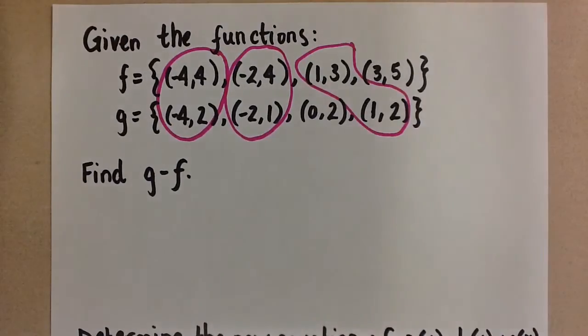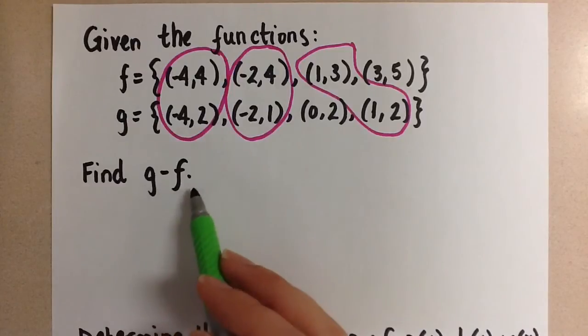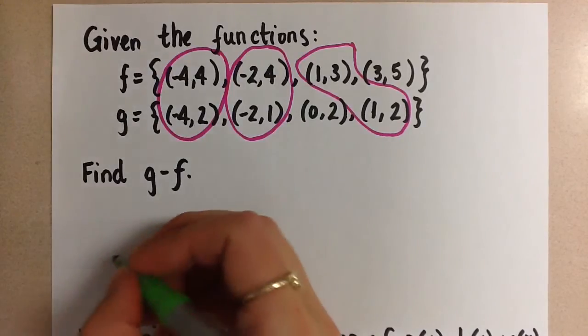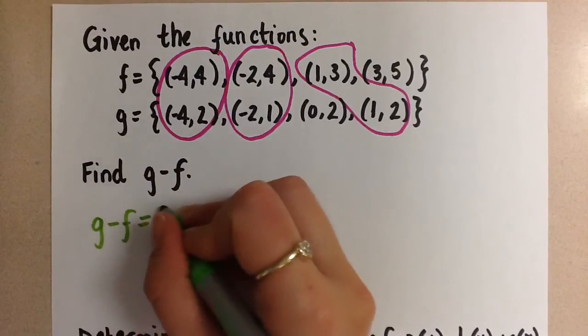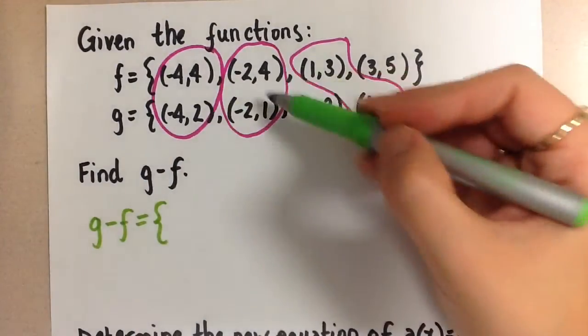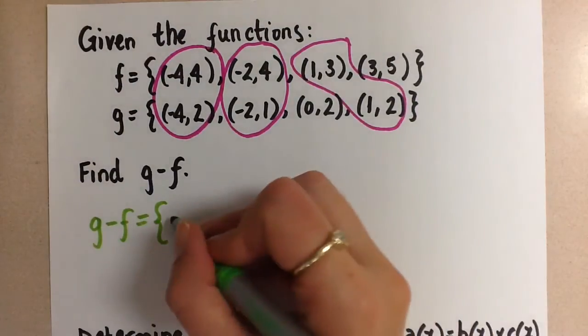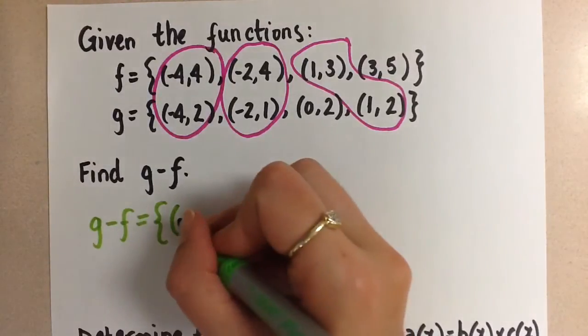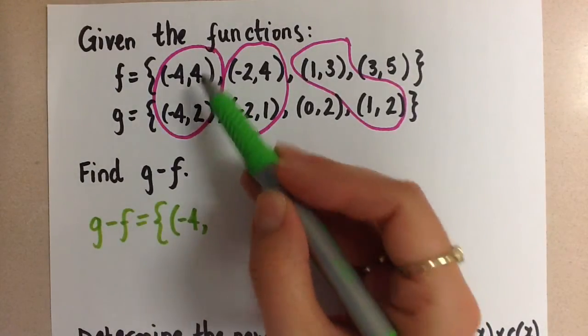So when we combine them, we're asked to find g minus f. To do that, g minus f, we are going to end up with a set of points, and we're going to combine each of these, so we'll end up with only three points in this new function. To do that, we keep the x value the same and then subtract the y coordinates only.